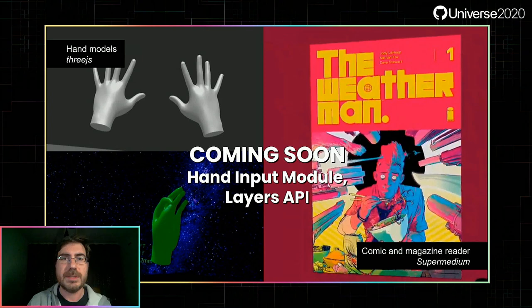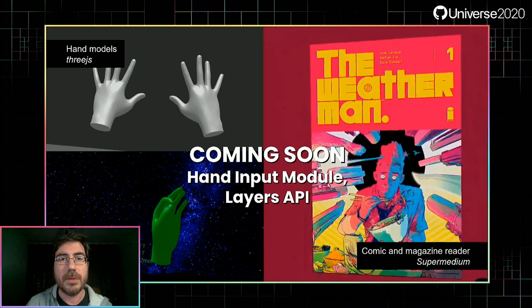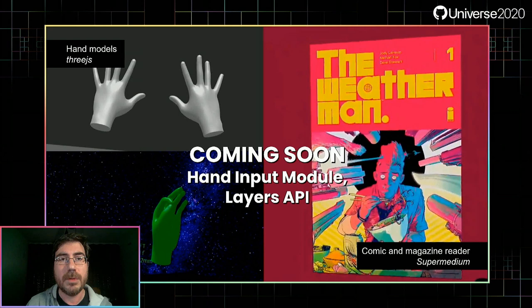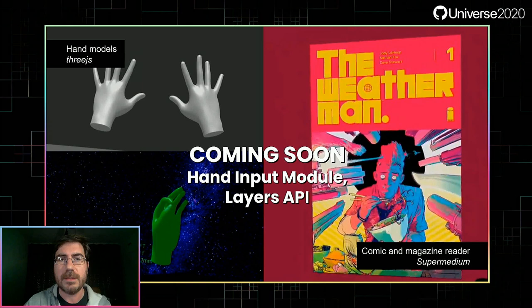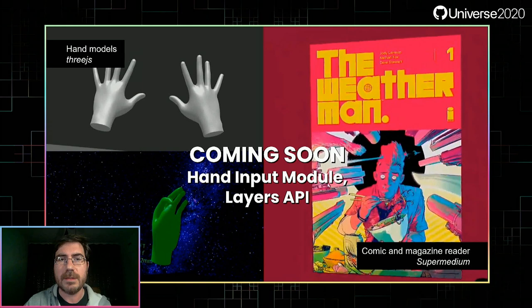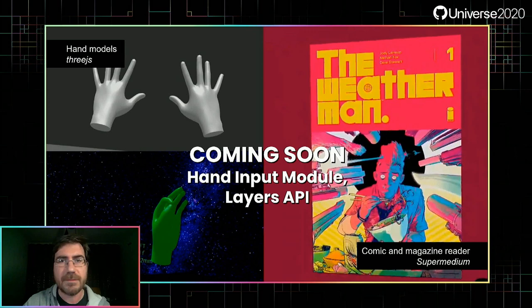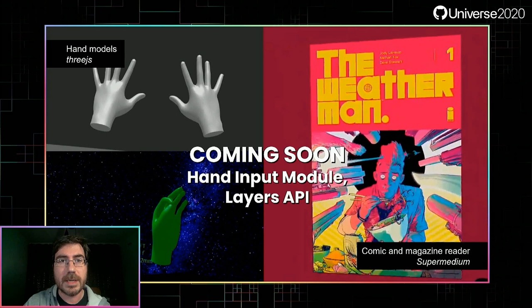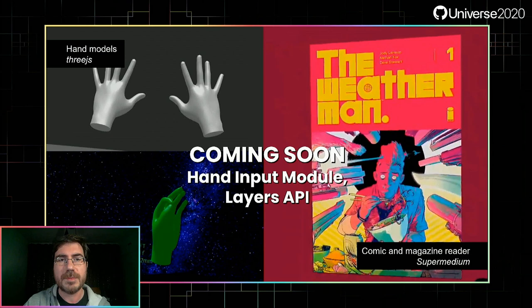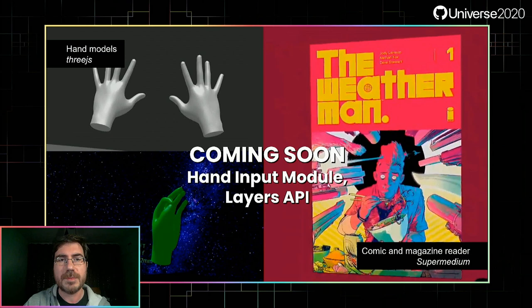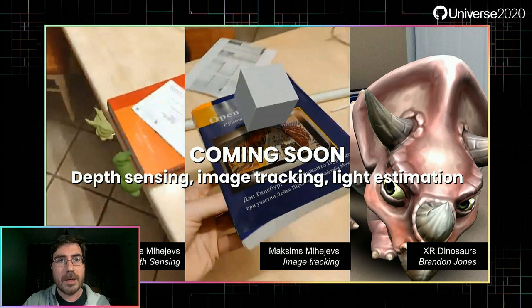Things are coming soon — new features that are here but behind a flag. The hand input module exposes poses of hand skeleton joints for rendering hand models in VR and performing gesture detection; Three.js already supports hand tracking and rendering out of the box, and HandyJS by Stuart Smith enables sign language detection. The layers API brings composition layers useful for displaying information, text, video, or textures as focal objects, improving performance, battery life, and visual fidelity — Supermedium uses layers to greatly improve fidelity in their 4XR comic book experience.